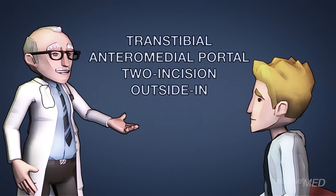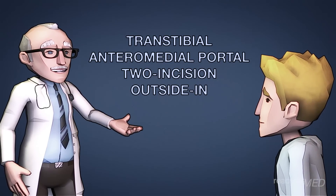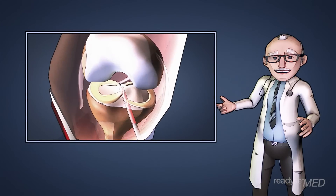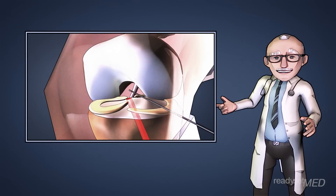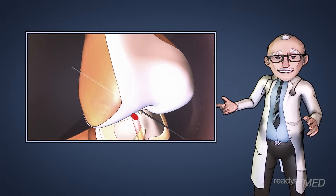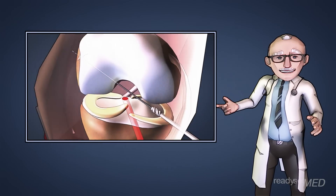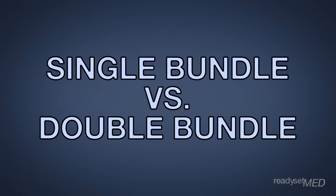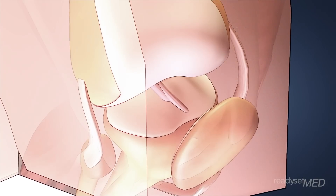Transtibial, anteromedial portal, two-incision, outside-in — these are all terms that doctors use to describe their surgical technique for creating the tunnel or path for your new ACL. While there are subtle differences between them, the goal is similar: to reliably place your ACL graft in the right place. Each technique has excellent results with an experienced surgeon.